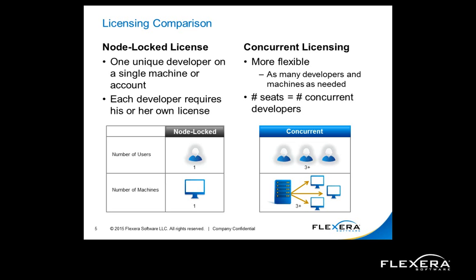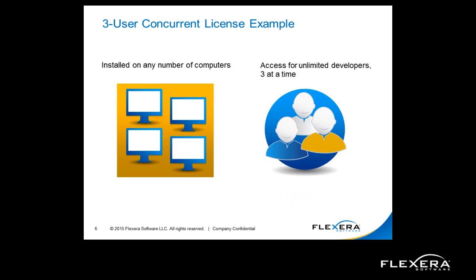Concurrent licensing offers a more flexible option. It can be installed on as many machines as you want and accessed by as many people as you like. The InstallShield client can connect to a license server on your network, and if a license is available it will activate. When the application is closed, it's returned to the license pool for access by another developer. You simply determine how many licenses may be used at the same time. For example, with a three-user concurrent license it can be installed on any number of machines and used by an unlimited number of developers, with three developers accessing the application at the same time.